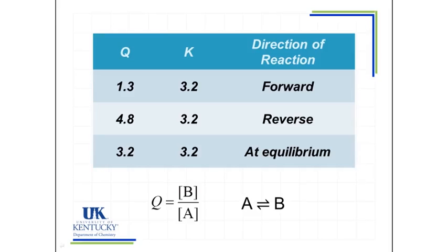So when we calculate the value of Q, we actually calculate it the exact same way we calculate K. The reason for the different label is because we don't know if we are at equilibrium and so we can't call it an equilibrium constant. So we call it Q which stands for the reaction quotient. Notice that for my reaction A going to B, we can write the reaction quotient, the concentration of B over the concentration of A or products over reactants. I can then calculate the value of Q and compare it to the value of K to determine which way the reaction will proceed.